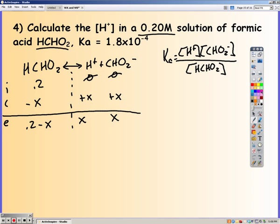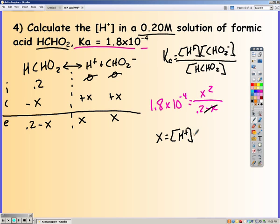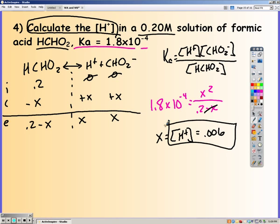You should have plugged in those equilibrium values into the equilibrium expression. Ignore the minus X. And our X is our concentration of H, which is equal to 0.006. If you read the problem carefully, it said calculate the concentration of H. And so we are actually done.